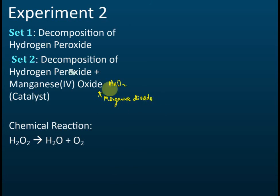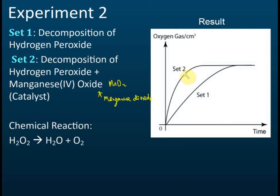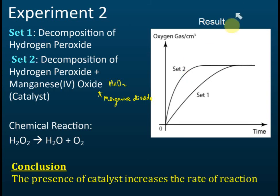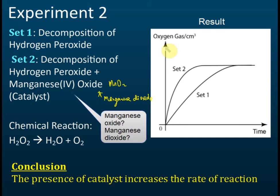Manganese(IV) oxide has one manganese and two oxygens. With the presence of manganese oxide in set two, the rate is higher. We can conclude that the presence of a catalyst increases the rate of reactions. Both experiments show that with a catalyst, the rate of some reactions can change.